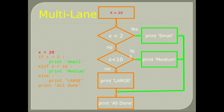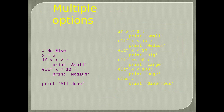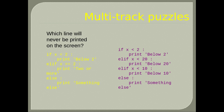Multiple options without an else: in this case we do not consider all possible options, just a few. Nothing else happens if x is not in any of the considered options. Multi-track puzzles: which line will never be printed? On the left example it will never print 'something else' since any number is less than, higher than, or equal to 2. On the right side, at least one of the print statements will be printed.